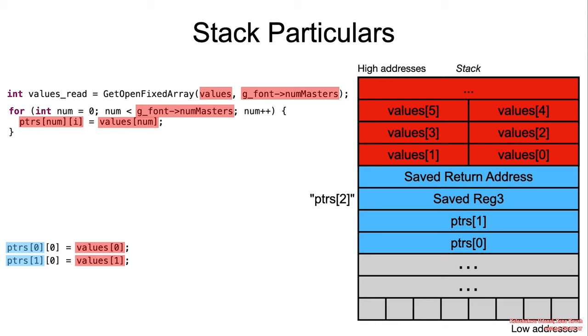pointers[2] gets referenced. So now the memory address that will be written to is Saved Reg3, that writes the item at values[2].